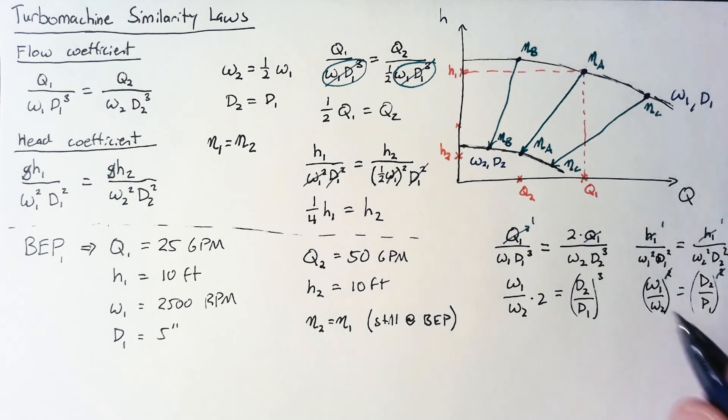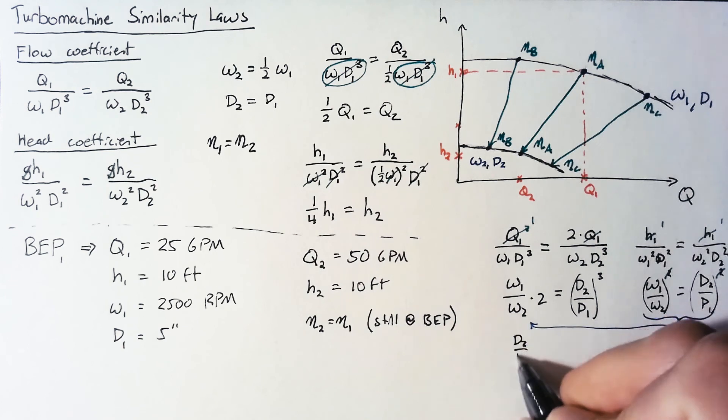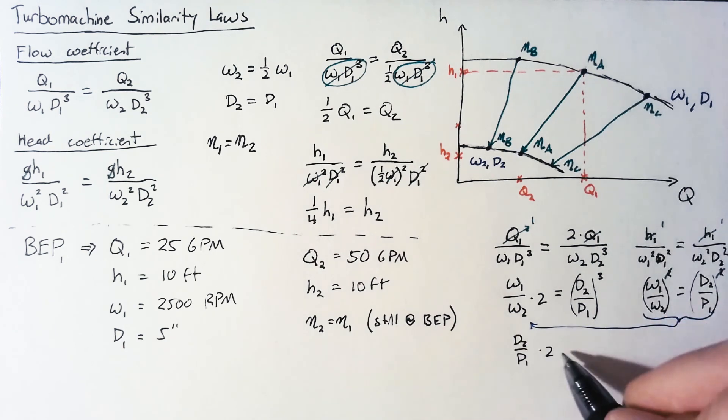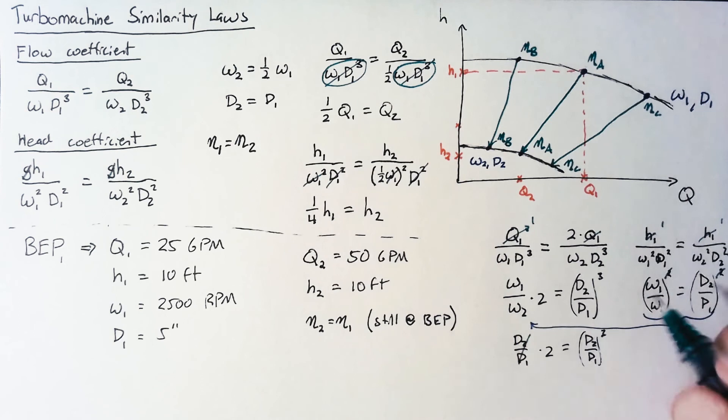So now what we'll do is take this equation and make the substitution for our omega ratio over on the flow rate equation. D2 over D1 times 2 is going to be equal to D2 over D1 cubed. Then getting rid of this ratio means that we have a squared instead of a cubed and then it's very easy just to take the square root of both sides. So from this we end up with D2 over D1 is equal to the square root of 2 or D2 is equal to square root of 2 times D1.